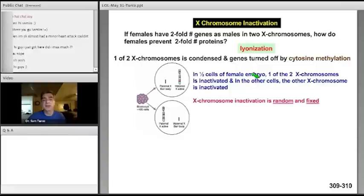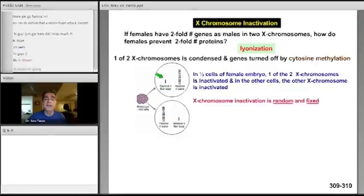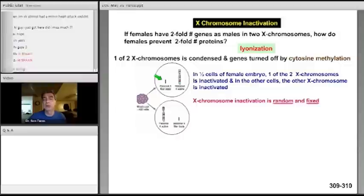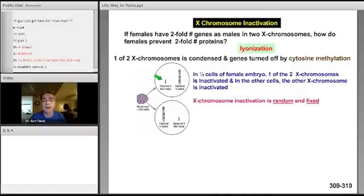This inactivation of the X chromosome is random and fixed. It means it's never reversed. In this cell, once you form that bar body, that maternal X chromosome is always off. In the other half of the cells, the paternally inherited X chromosome forming the bar body is always off, never to be reversed ever again in those particular cells. Okay, so now what I want to discuss here is the concept of how this integrates with pathology.